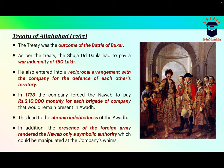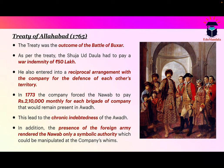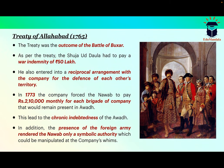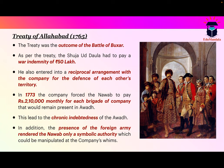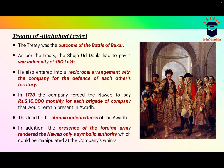In 1773, Awadh was a prosperous province and the Company was driven by its greed. They forced Shuja-ud-Daula to pay 2 lakh rupees monthly for each brigade of Company soldiers stationed in Awadh. Imagine the value of that sum in the 18th century — it was an enormous amount. This meant the nawab was paying large sums to maintain a foreign army whose actual authority belonged to the East India Company, not to him.